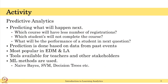Predictive analytics is actually predicting what will happen next. For example, which course will perform better, which course will have fewer registrations in the university, which students will not complete the course, and what will be the performance of a student in the next question — from a fine-grained level up to a higher level like a course rating.